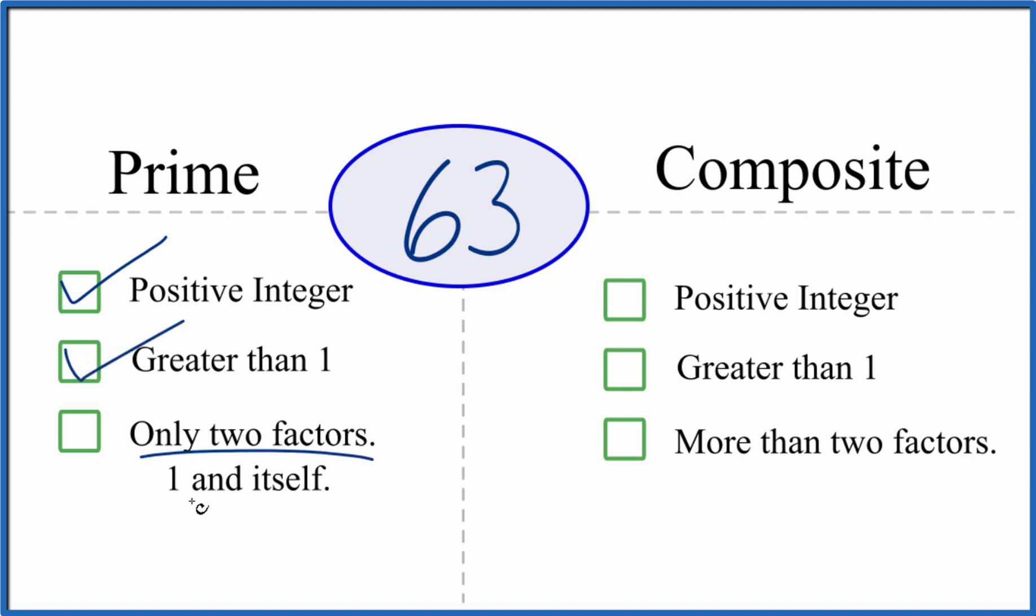And are there only two factors, 1 and 63, that divide evenly into 63? Well, we know that 1 times 63, that gives us 63. So there are two factors. But are there any others? It turns out there are a few more.